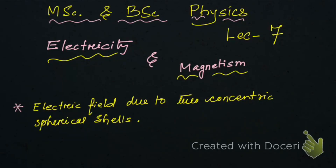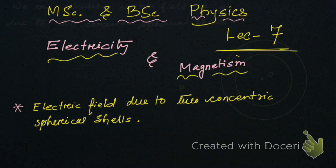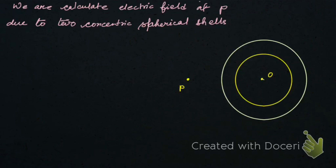Hello friends, welcome to another lecture — lecture number seven of Electricity and Magnetism for BSc and MSc students. Here we're going to discuss the electric field due to two concentric spherical shells. Before we start, please subscribe to the channel if you are new, hit the thumbs up button and the bell icon so that you get notified when new videos are uploaded.